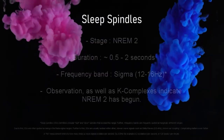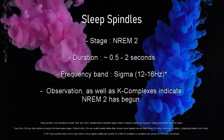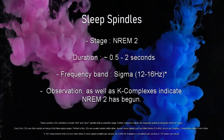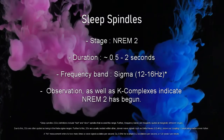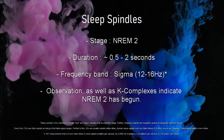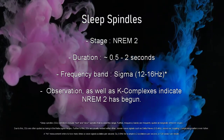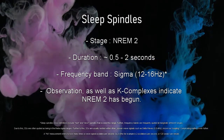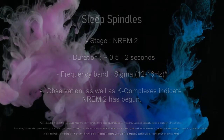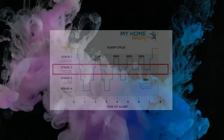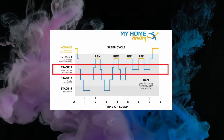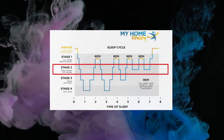Sleep spindles are a particular waveform seen in the second stage of sleep. They occur as 0.5 to 2 second bursts of sigma activity, 12 to 16 Hz, that serve as signposts that the participant has passed through the first stage of sleep. This stage of sleep recurs throughout the night, following each session of slow-wave sleep and REM sleep.